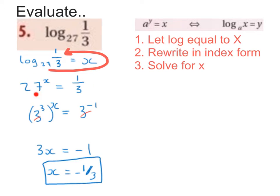Next, I'm going to rewrite 27 as a base of 3 — it's going to be 3 cubed. I must put brackets around it, very important. I'm going to rewrite 1 over 3 as 3 to the power of minus 1. Now I can see that my bases are matching, so I can cancel out the 3s. 3 multiplied by x is 3x, and I just bring down the minus 1. I multiplied these together because I was raising a power to a higher power. So if 3x is equal to minus 1, then x is going to be equal to minus 1 third.